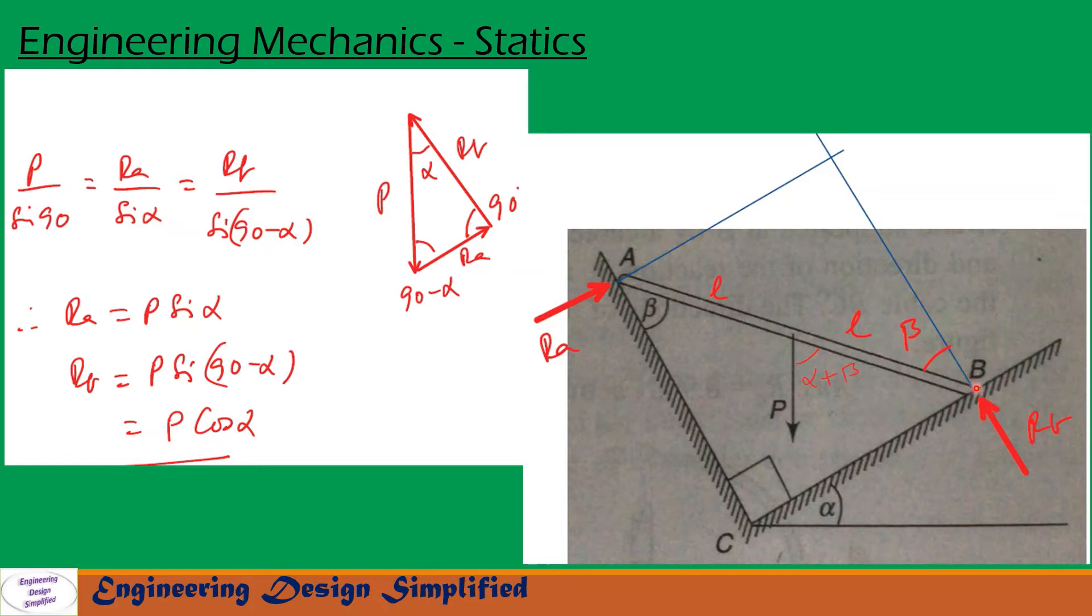So at this end B, there is a reaction RB will be acting perpendicular to this plane. Similarly, at this end A, there is another reaction RA will be acting perpendicular to this plane here.